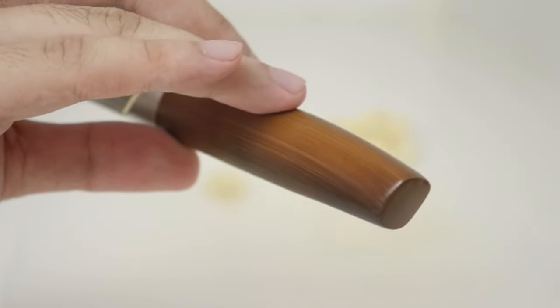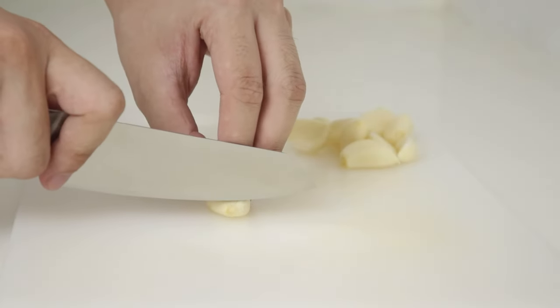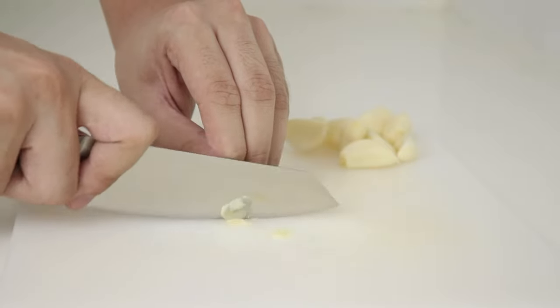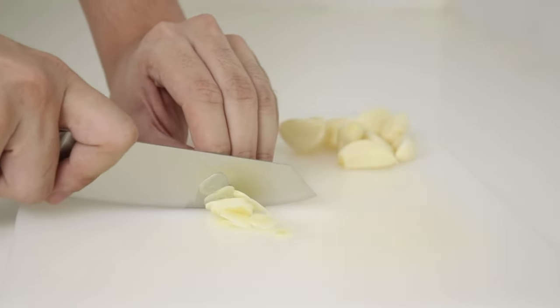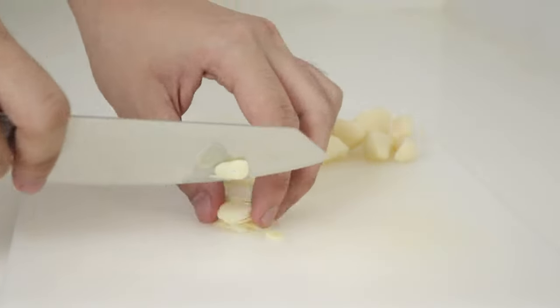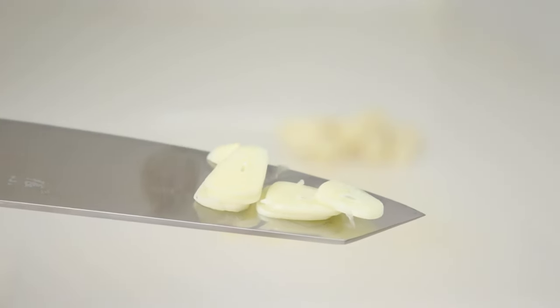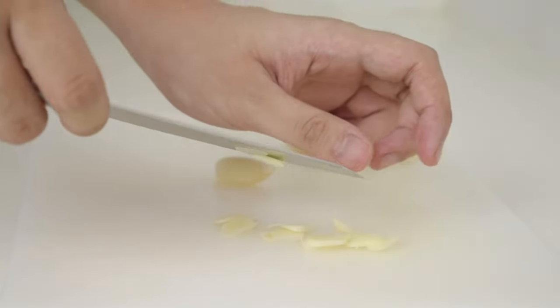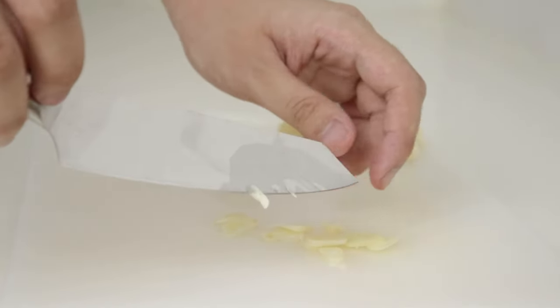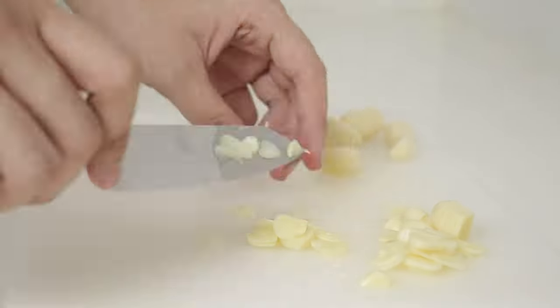We are now ready for our slicing and chopping tests for this knife. This is the paring knife, really useful for garlic. Again, very safe to use. We are using a nice claw grip to make sure that we do not bleed. We have very nice thin garlic slices, really useful for your different kitchen applications.